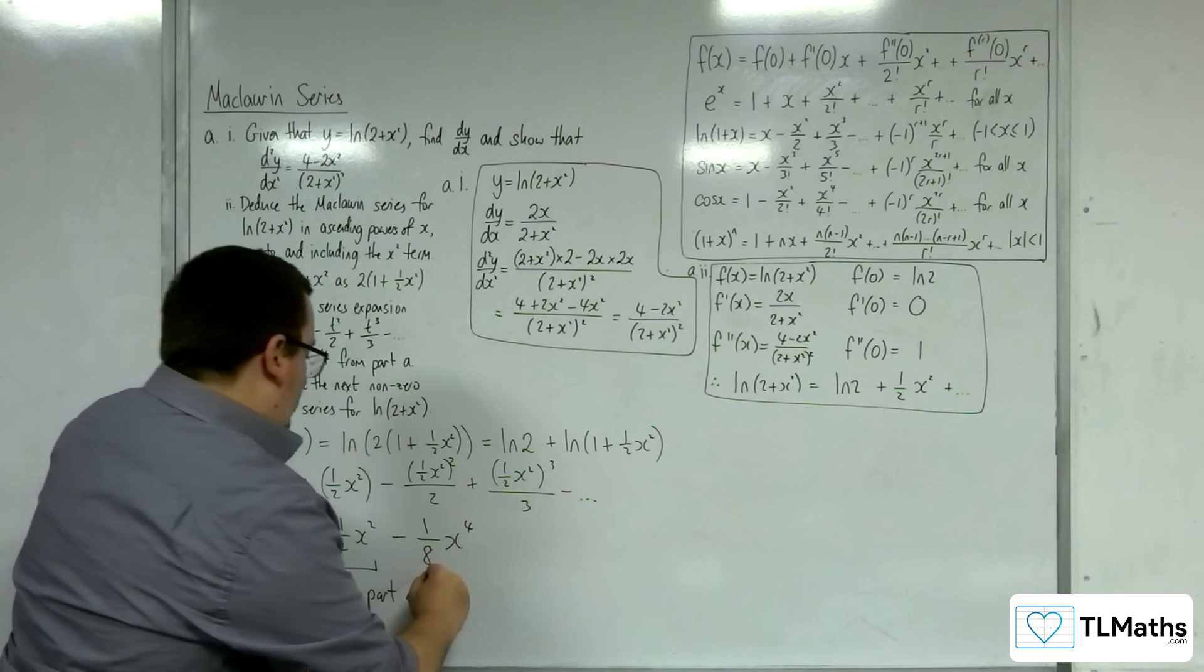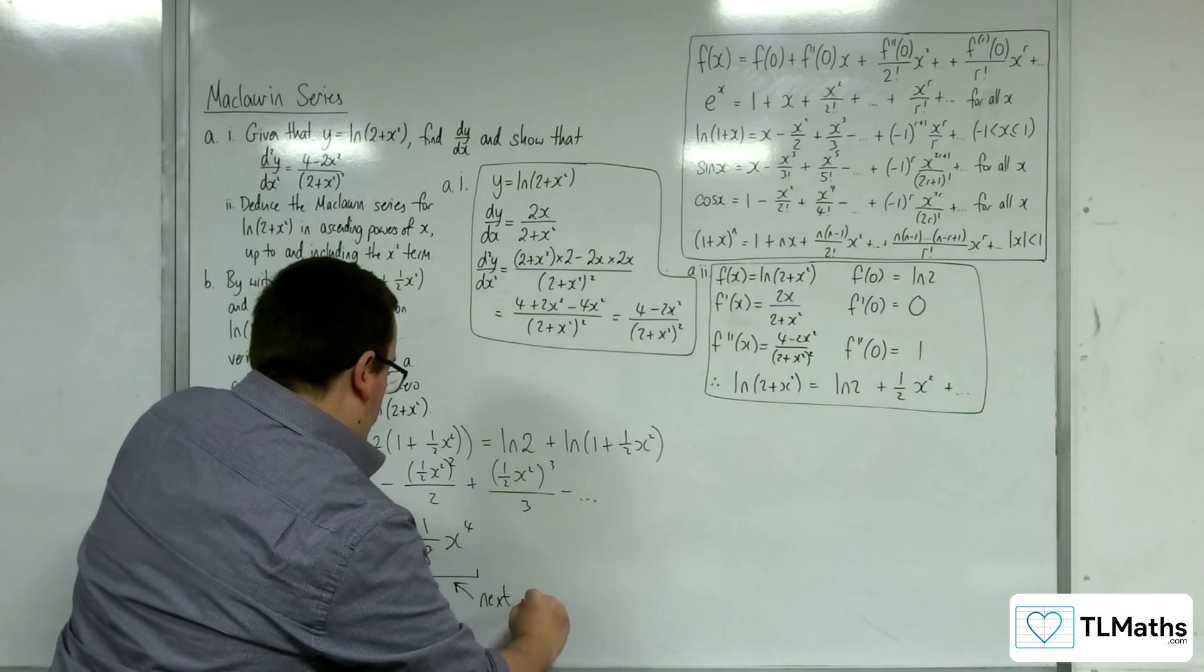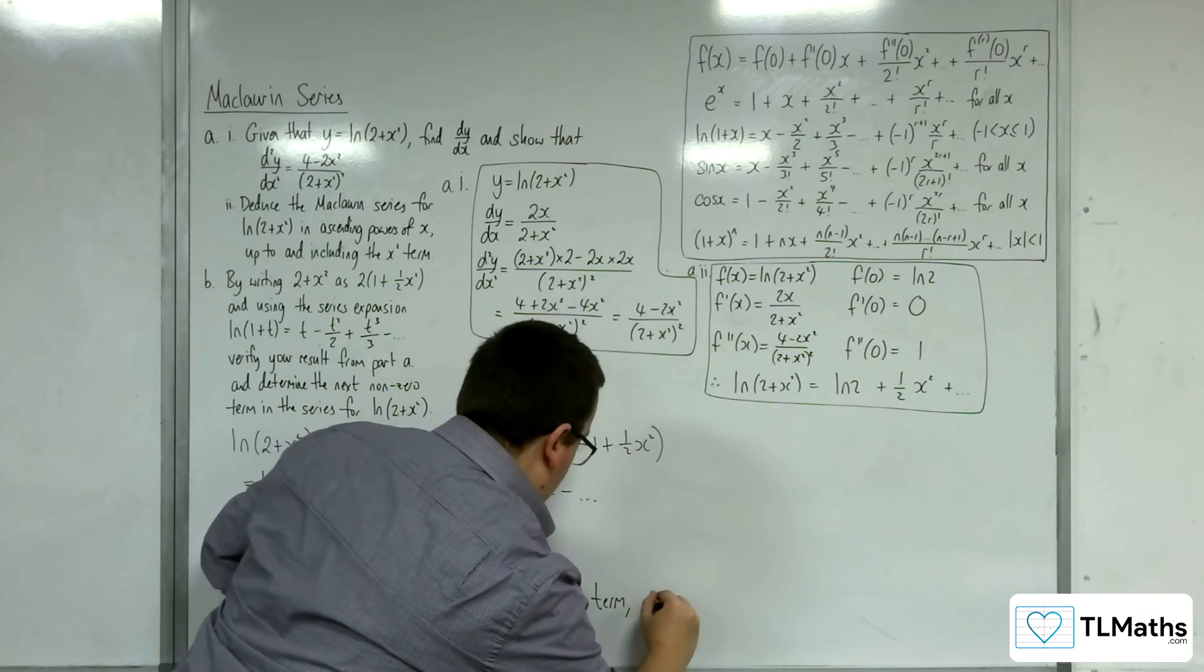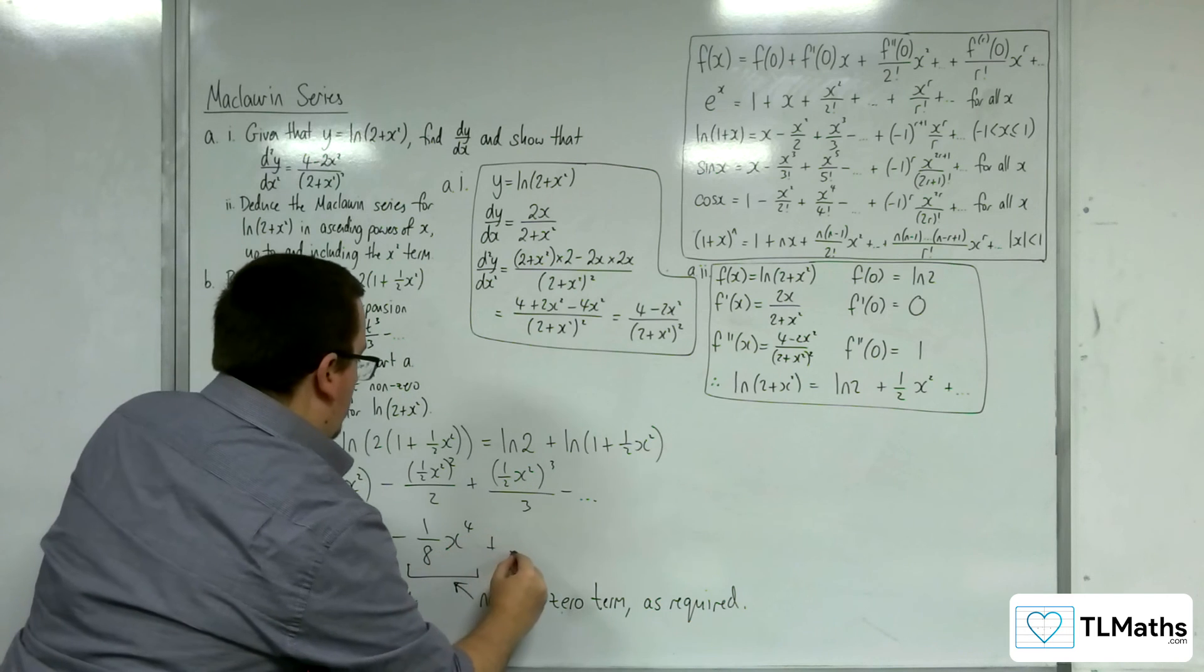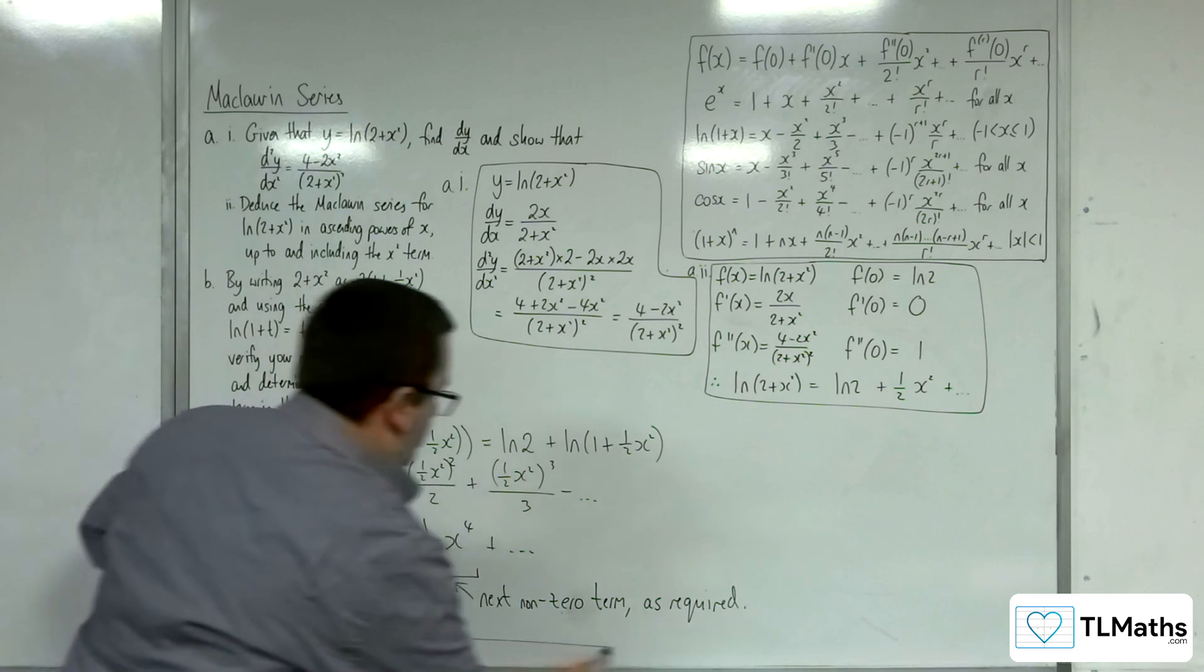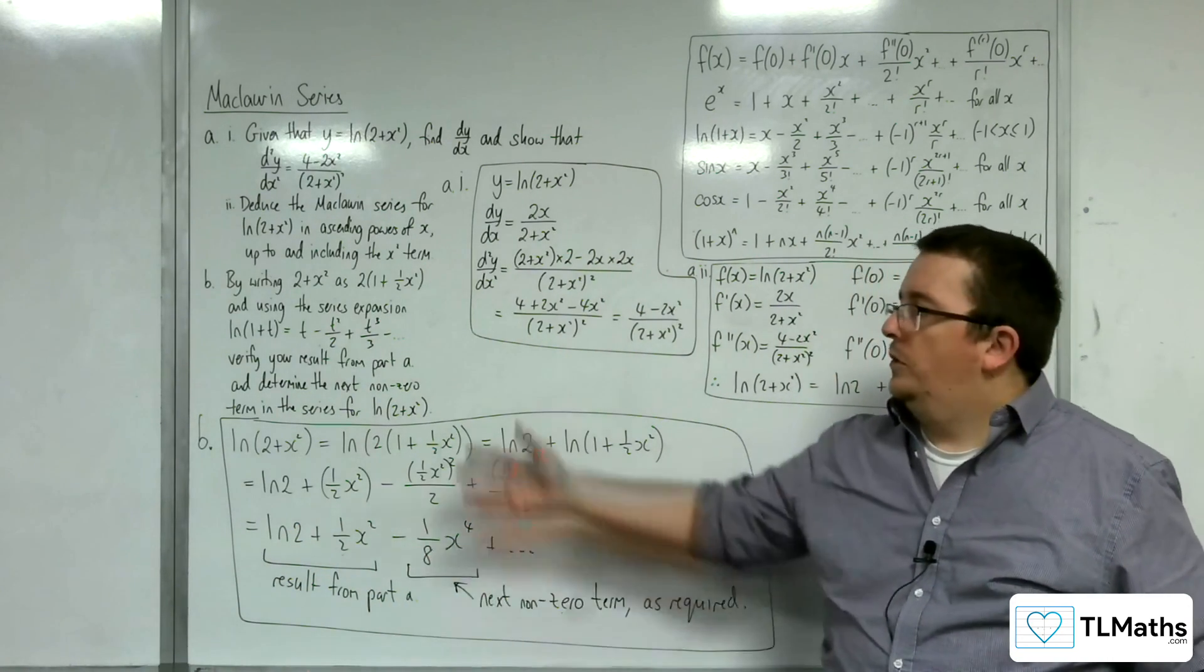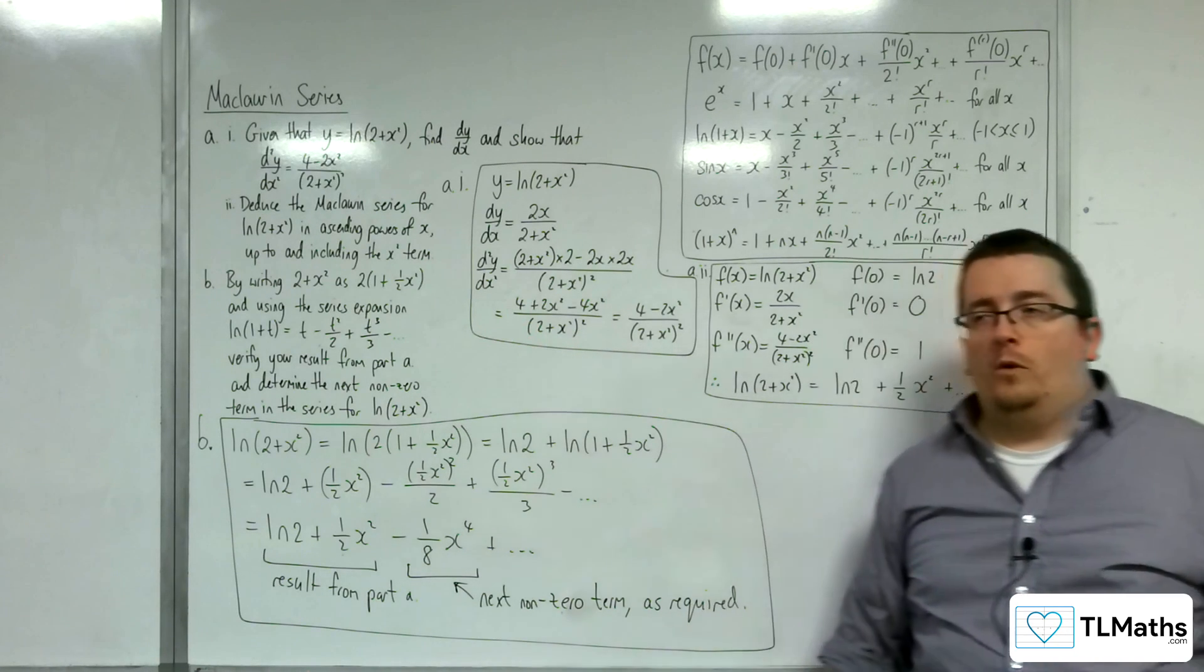And so this is the next non-zero term, if I can write now, as required. OK? I'm not interested in that term. And so that is my answer for part b. So minus 1 eighth x to the 4 is that final, is that next non-zero term in the expansion that I wanted to find.